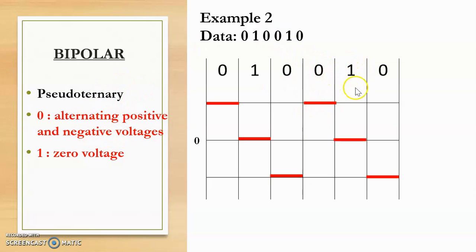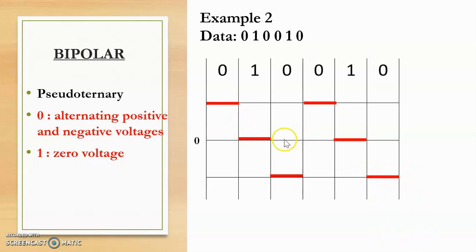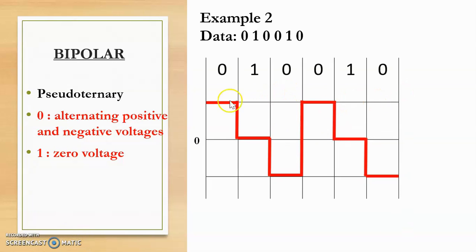The next bit is 1, meaning 0 voltage on the reference line. The last bit is 0; since the previous 0 value was positive, this will be negative. After connecting the lines, we get the digital signal for data 010010 using pseudo ternary line encoding.